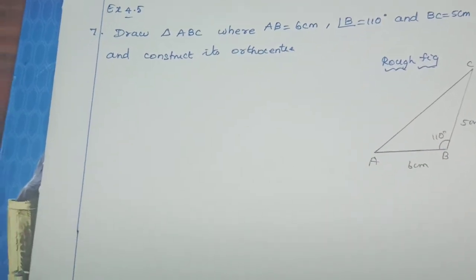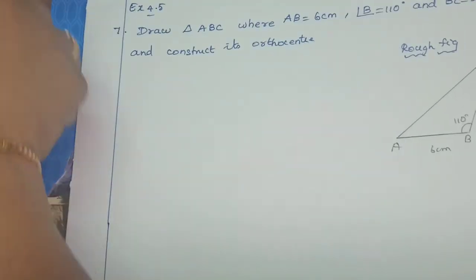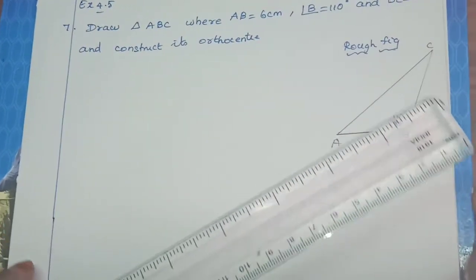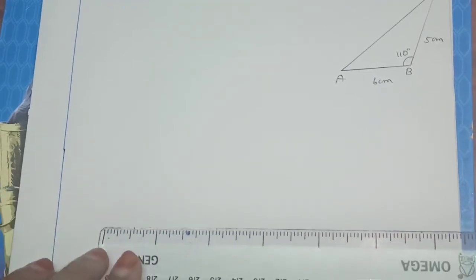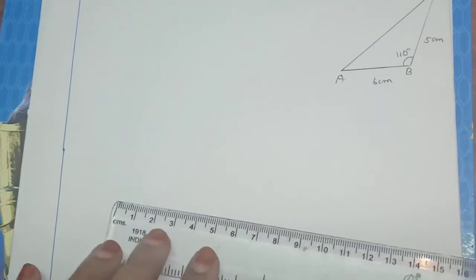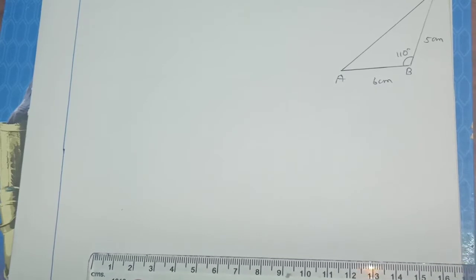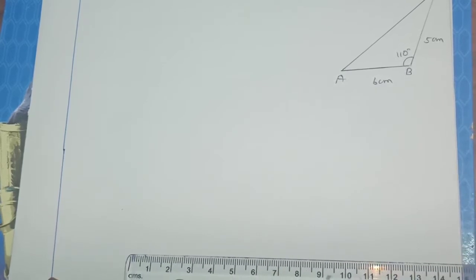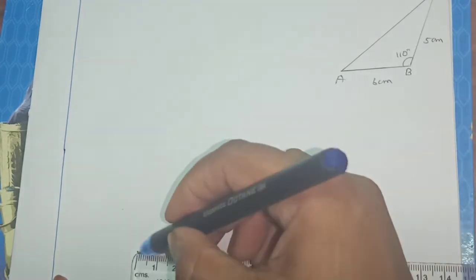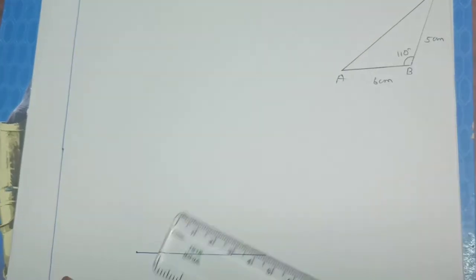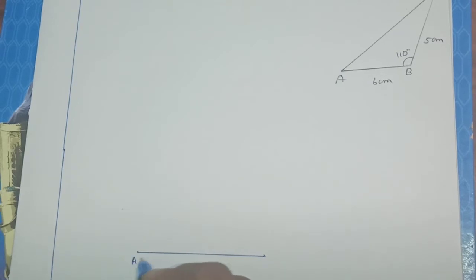Now, we are going to construct. First measure 6 cm base. I am measuring using ruler, 6 cm. So 6 cm, I am drawing the base, so that is AB, so 6 cm is ready.